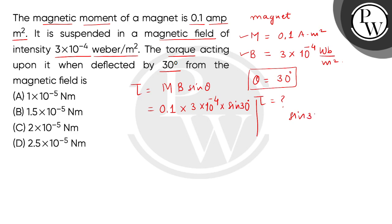The value of sin 30 degrees is half. So this gives us 3 divided by 2 multiplied by 10⁻⁵, which equals 1.5×10⁻⁵ Nm.